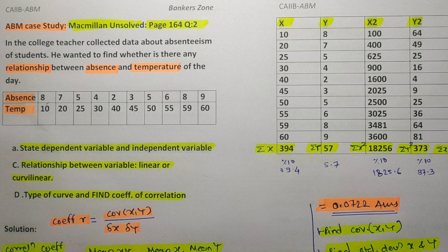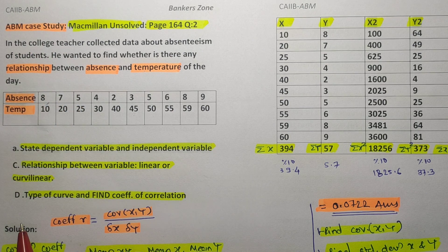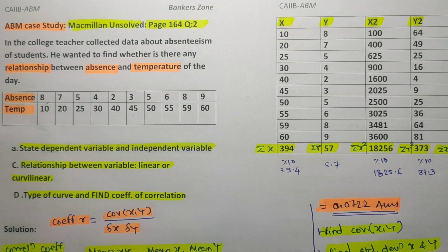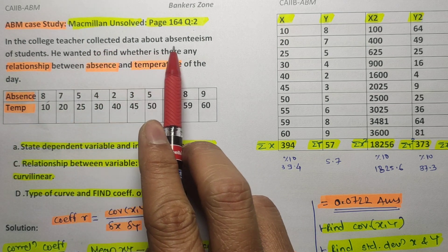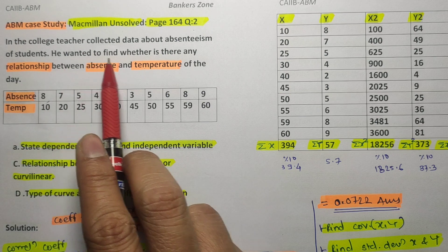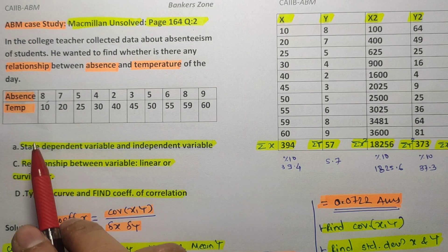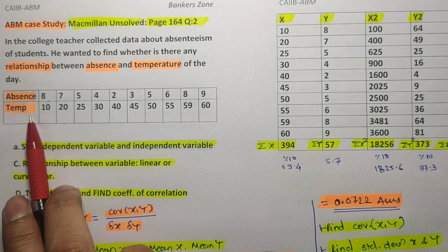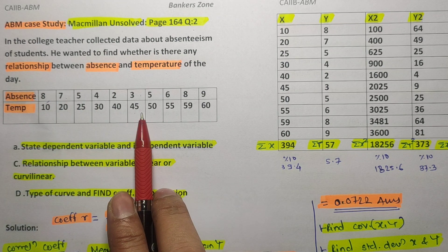In this session we will complete one case study: the Advanced Bank Management (ABM) case study from the Macmillan unsolved case study, page number 162, question number two. A college teacher collected data about absenteeism of students and wanted to find whether there is any relationship between absence and the temperature of the day — specifically, if temperature increases, whether absenteeism increases or not.